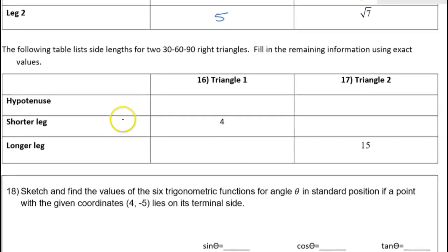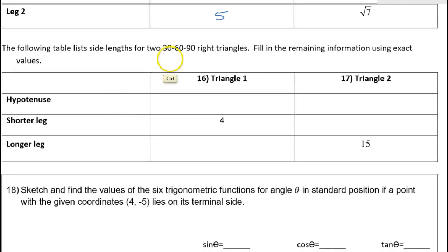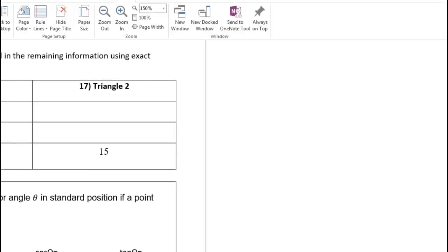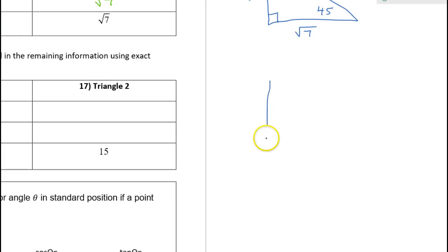The next couple problems refer to the 30-60-90 triangle. So let's review how that works. Here is an example of a 30-60-90 triangle.